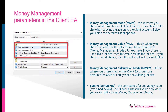You will find the list of available options in MMM later. Now let's look at MMV. MMV is where you choose the value for the lot size calculation parameter. MMV is the value for MMM. For example, if you choose to use a fixed lot size in the MMM settings, then MMV is where you put the lot size you want to use. Another example: if you choose a lot multiplier in MMM, then MMV should be the number you want to act as the multiplier.